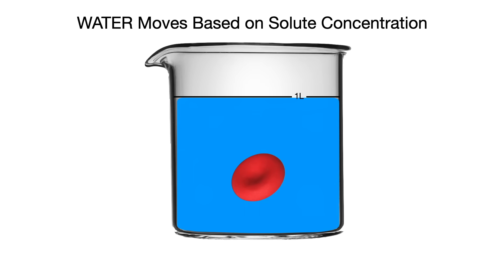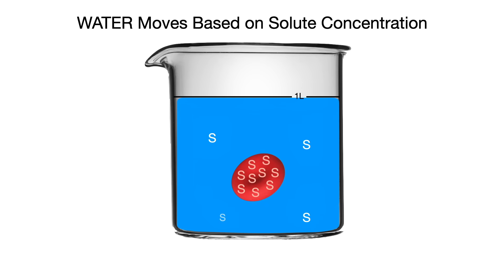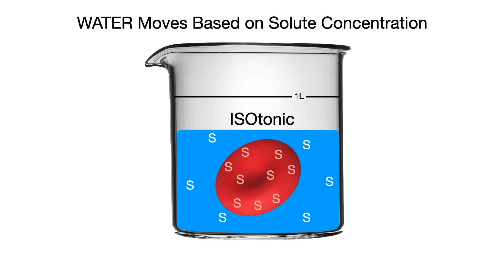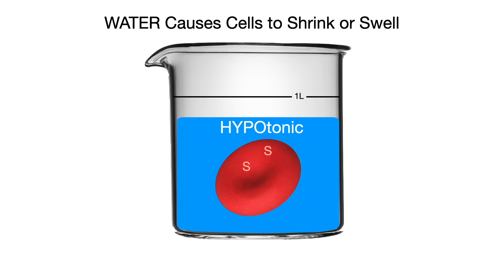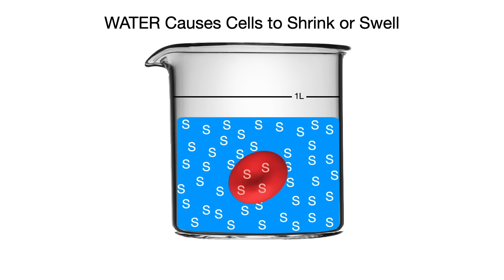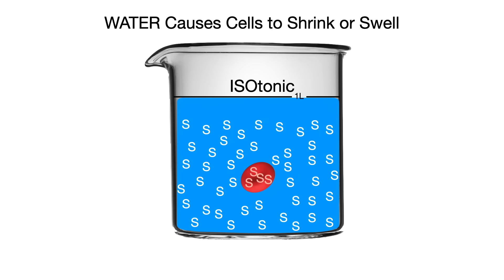Also know that water moves in or out of a cell based on solute concentration. If the cell is hypertonic — meaning it has a higher solute concentration than the surrounding solution — water will flow into the cell to dilute the cytosol until isotonicity is reached. If the cell is hypotonic — meaning it has a lower solute concentration than the surrounding solution — water will flow out of the cell to dilute the surrounding solution until isotonicity is reached.